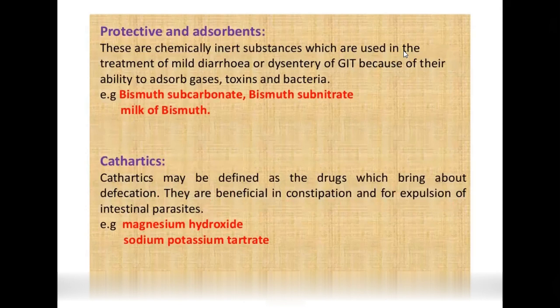Protective and absorbent agents are neither acid nor base. They are used in mild diarrhea and dysentery due to their ability to absorb gases, toxins, and bacteria. Examples are bismuth subcarbonate, bismuth subnitrate, and milk of bismuth.